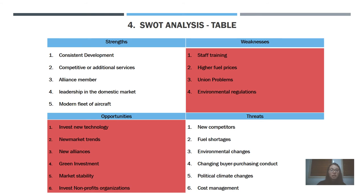The external factors are opportunities and threats. The opportunities are investment in new technology, new market trends, new alliances, green investment, market stability, and investment in non-profit organizations. The threats are new competitors, fuel shortages, environmental change, changing buyer conduct, political and regulatory change, and cost management.